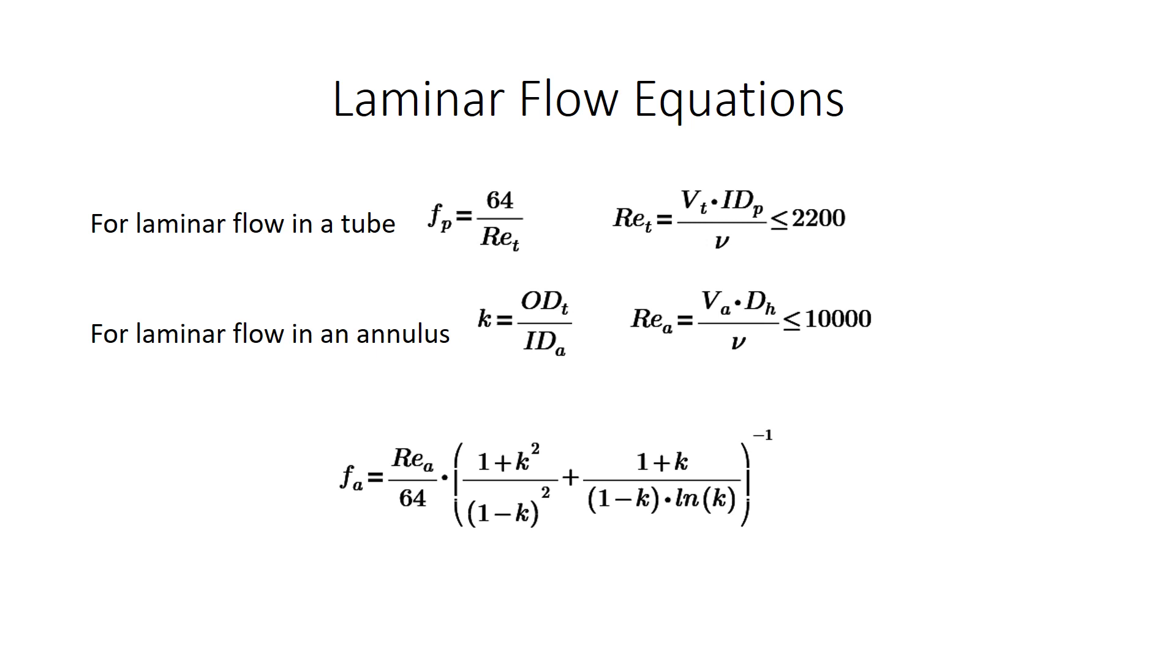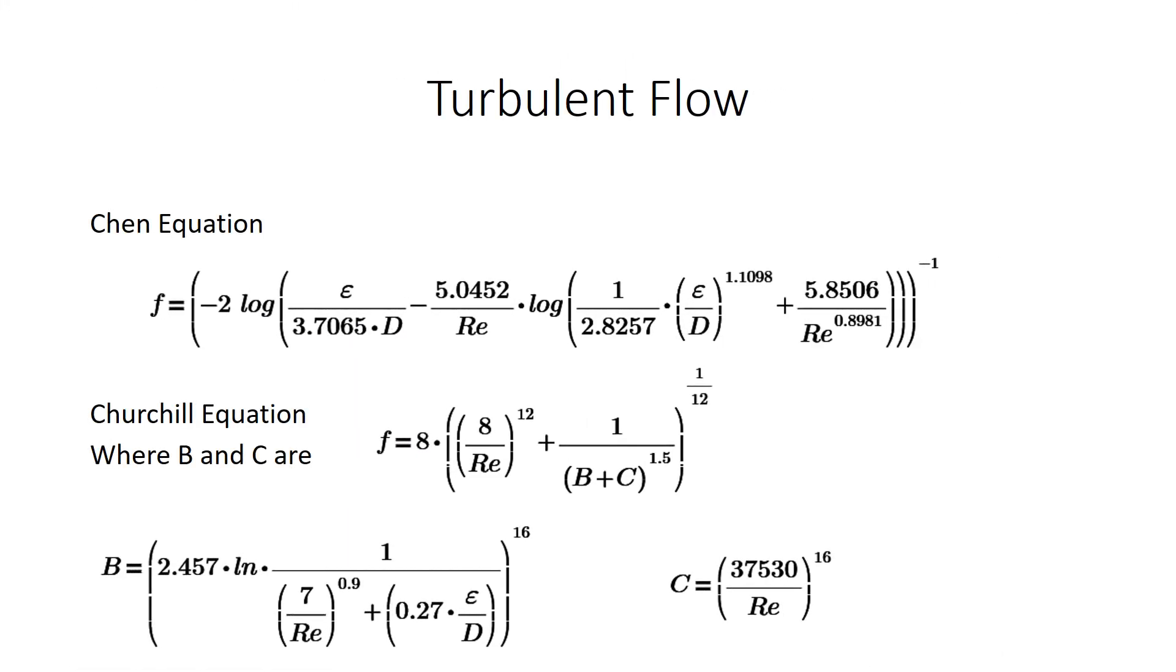For laminar flow in the annulus, we're first going to use a K factor, which is outer diameter of the tube over the inner diameter of the annulus region. And that's going to be for Reynolds number below 10,000. We will then use the formula associated with that friction factor for that case.